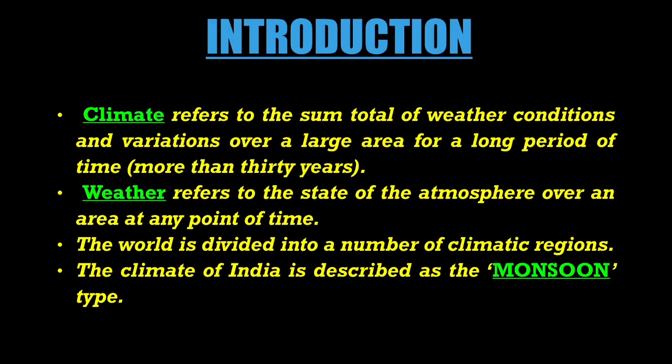Introduction. Climate refers to the sum total of weather conditions and variations over a large area for a long period of time. The time period is usually more than 30 years. So climate is a long-term idea. Whereas weather refers to the state of the atmosphere over an area at any point of time — it could be 2 hours, 1 day, or a week. So climate is a long-term idea while weather is a short-term idea.